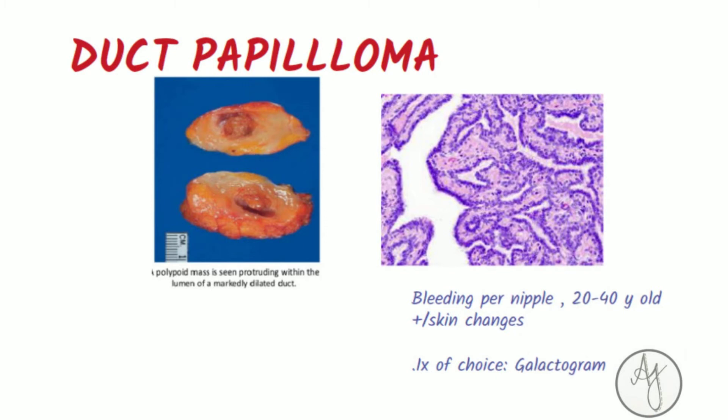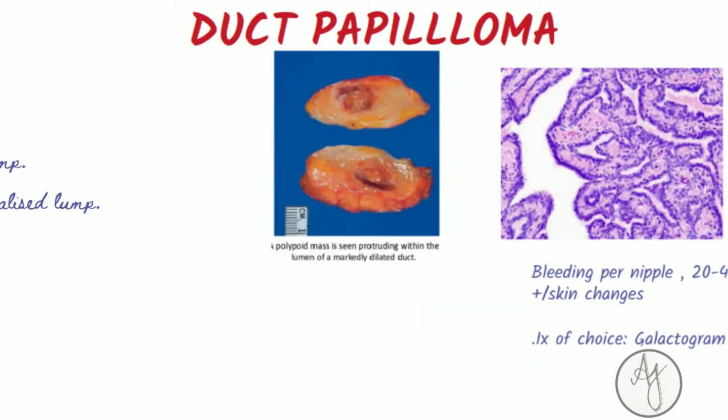If there is bleeding per nipple in a female aged 20 to 40 years, along with skin changes, it is usually a ductal papilloma. The investigation of choice here is a galactogram.